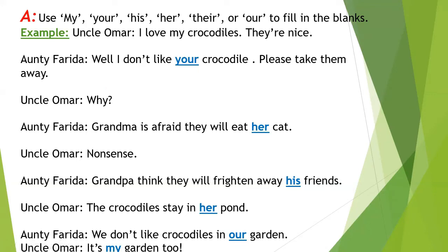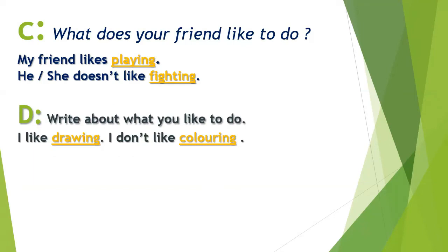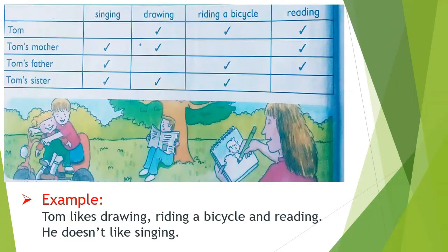Okay, turn to your next exercise — Exercise B. Look at the table about Tom's family. Look at the picture and write sentences about what they do and do not like to do. Complete this table, and I hope you can do this. Now move on to the next slide.